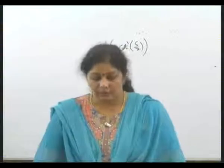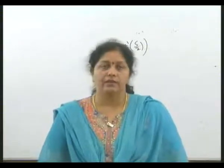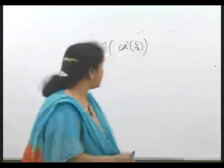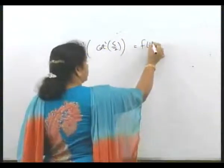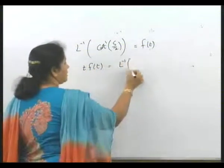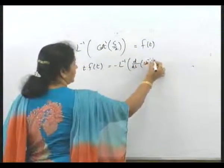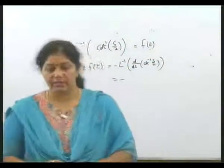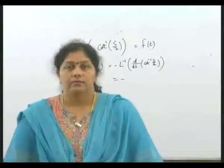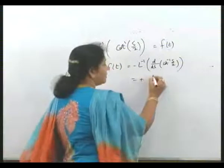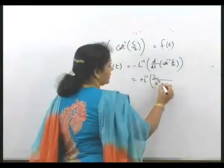To find t times f(t), we take L inverse of minus d/ds of cot⁻¹(s/2). The derivative of cot⁻¹(s/2) is minus 2 upon s squared plus 4. So minus and minus become plus, giving us L inverse of 2 upon s squared plus 2 squared.